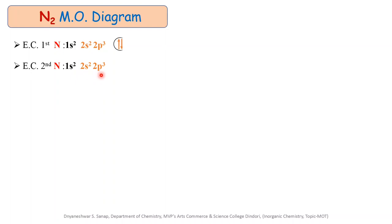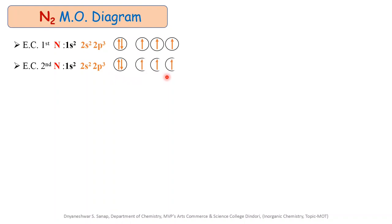Let us write the valence electronic configuration in tabulated form for each nitrogen atom. For the first atom: 2s2 and 2p3. Similarly, for the second atom: 2s2 and 2p3. There are a total of 10 electrons which participate during the formation of N2 molecular orbitals.